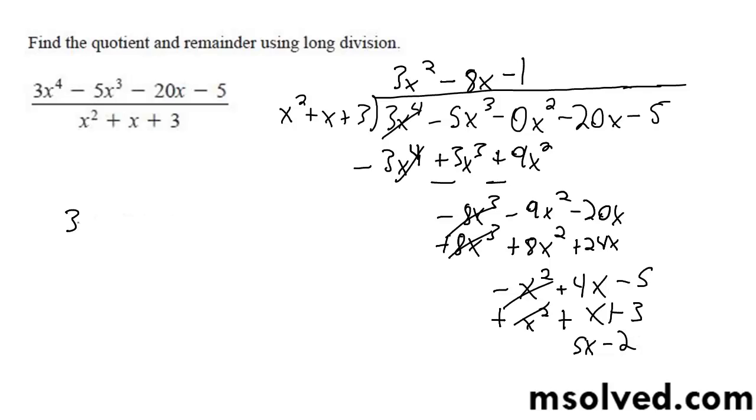So our final solution is going to be 3x squared minus 8x minus 1, plus 5x minus 2, all over x squared plus x plus 3. That's it.